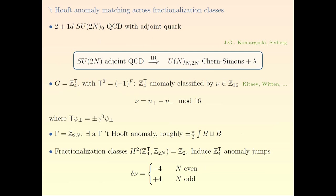This phenomenon is ubiquitous — it happens in all dimensions, including 3+1 dimensional QCD theories like N=1 super Yang-Mills. Let me show an example. We are in 2+1 dimensions and we look at SU(2) QCD with one adjoint quark. The first question is what happens to this theory in the infrared. A proposed answer was given some years ago with Nati and Zohar — the proposed answer is that you get essentially a non-trivial topological theory.